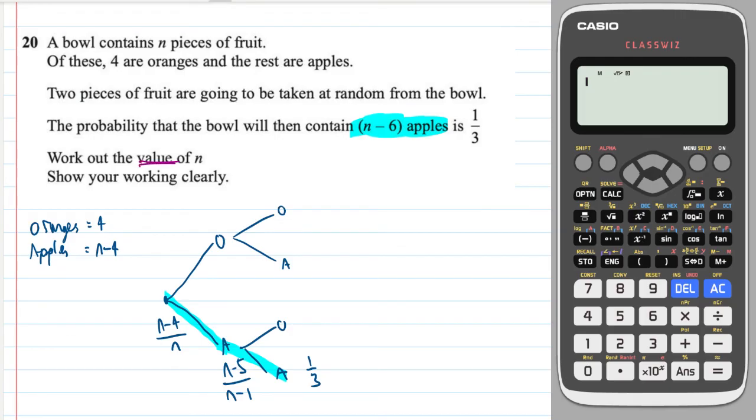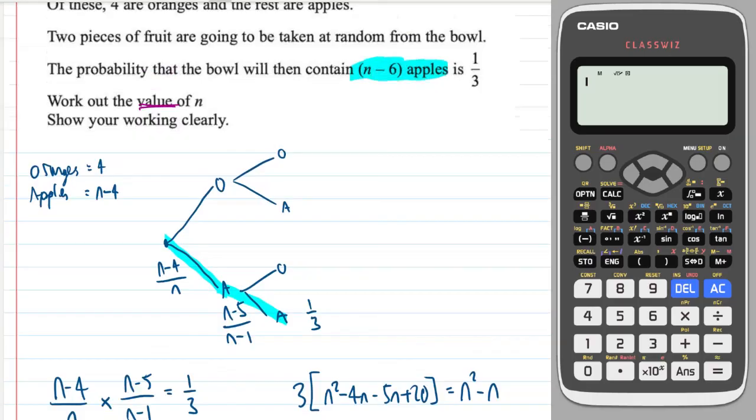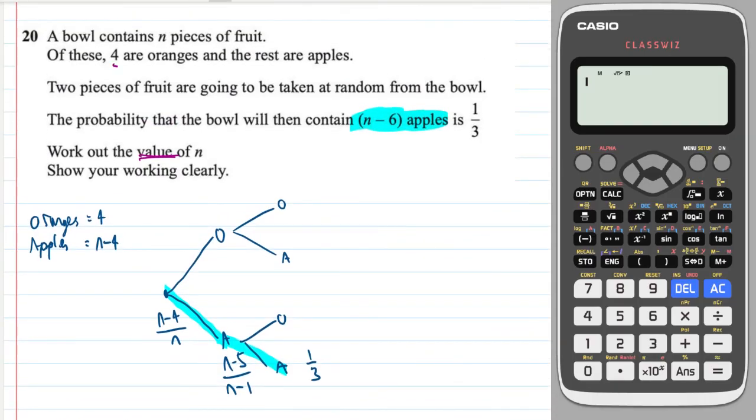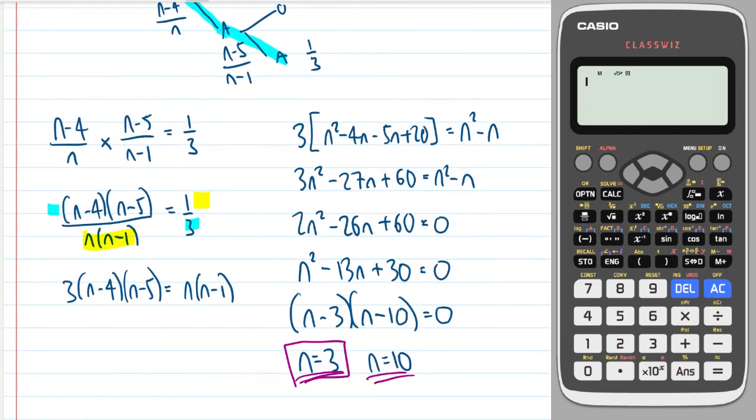Okay, let's think about this. Well, can there be a total of three bits of fruit in the bowl? No, there can't, because we already know there were four oranges. So therefore, the correct answer and the only correct answer is n is equal to 10. And we must reject n equal to three.